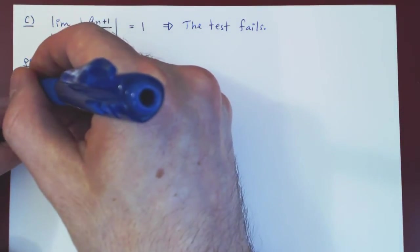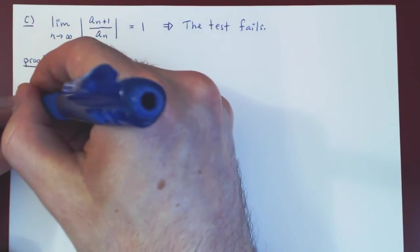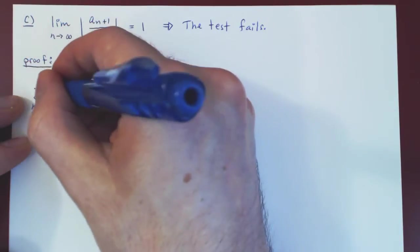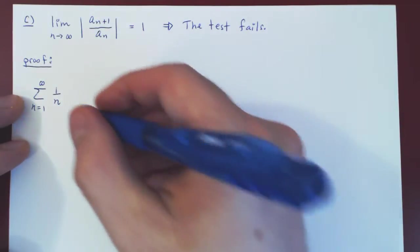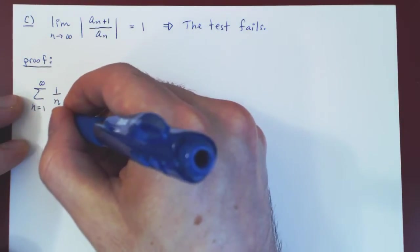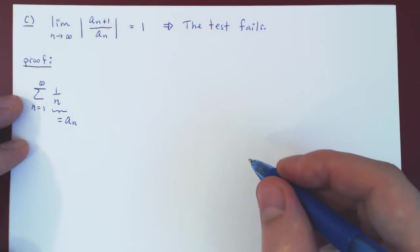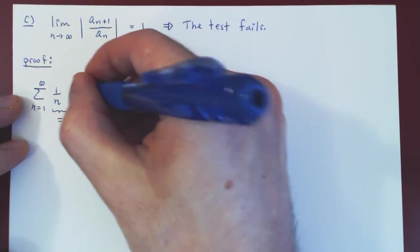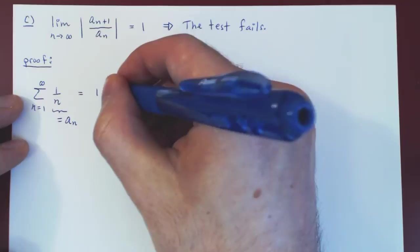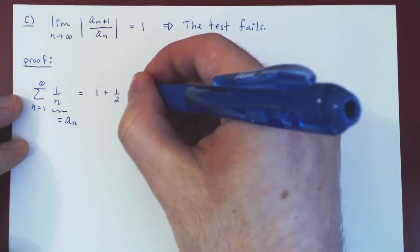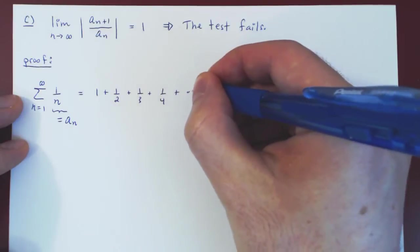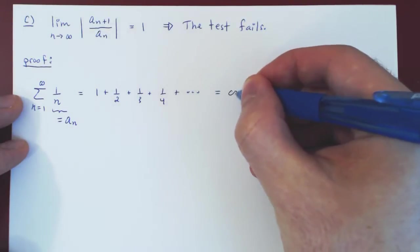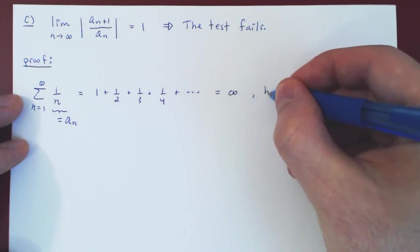So look at the first series, summing from 1 to infinity 1 over n. So a_n here is simply 1 over n, and we know this series diverges. This is the harmonic series, 1 plus a half plus a third plus a quarter and so forth. This series is infinite, hence it diverges.